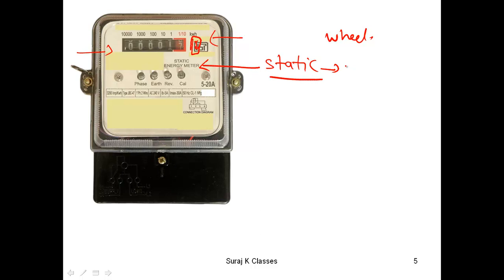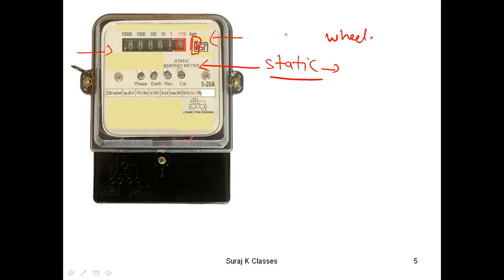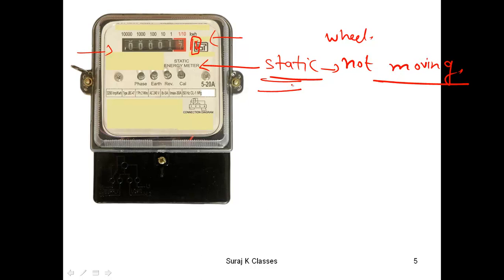Static means something that is not moving. So 'static energy meter' means this is an electronic meter with no moving parts inside. In old meters, a wheel was installed that kept rotating to make the kilowatt hour reading. This new meter is called static because there is no rotating component — everything is electronic.